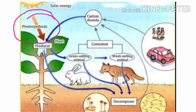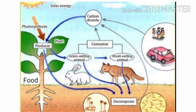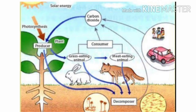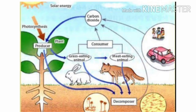Plants trap energy from sunlight and store it as food in the form of chemical energy. Herbivores eat the plants, and later carnivores eat the herbivores. Carnivores and herbivores, along with plants, finally die and are decomposed by decomposers. Energy and nutrients pass through different organisms in an ecosystem in a cycle or sequence.